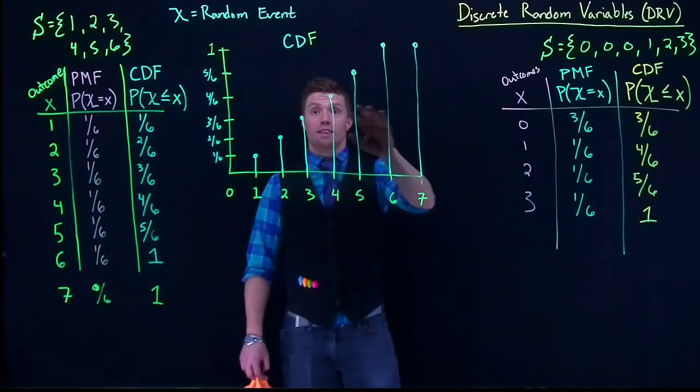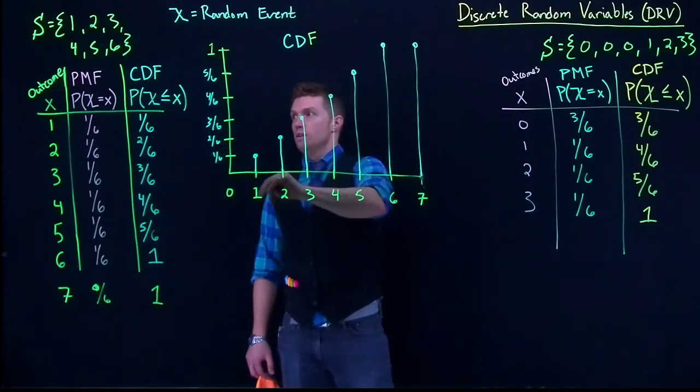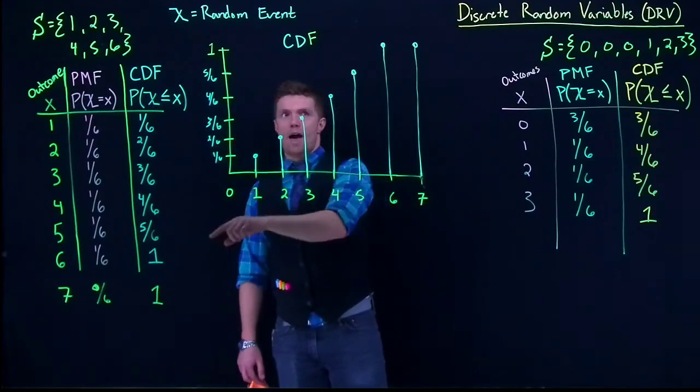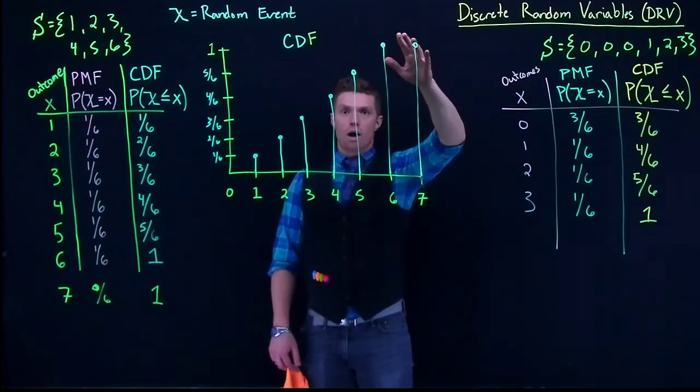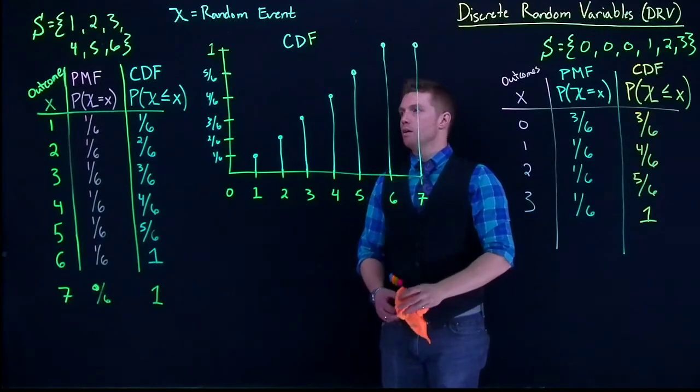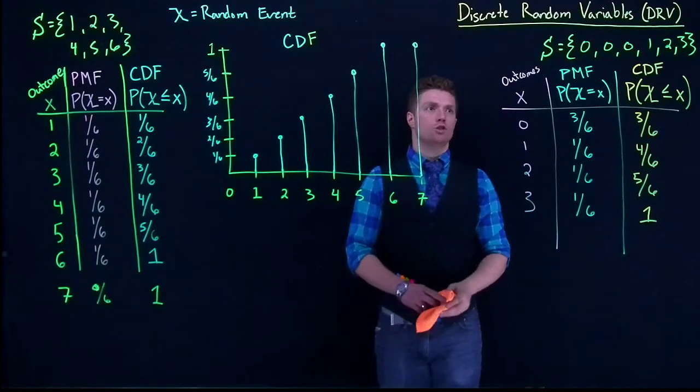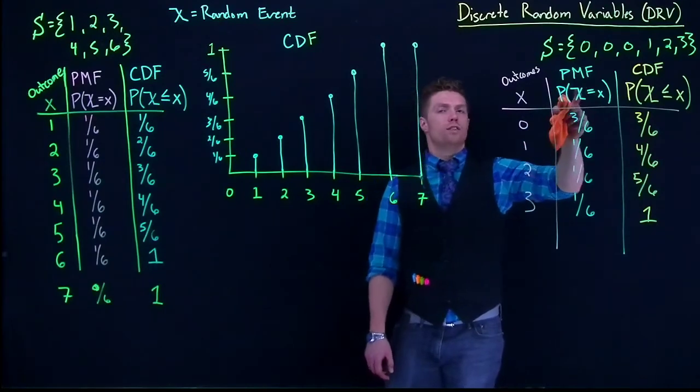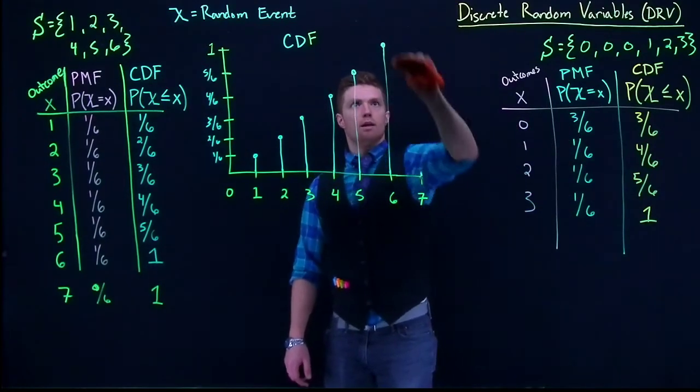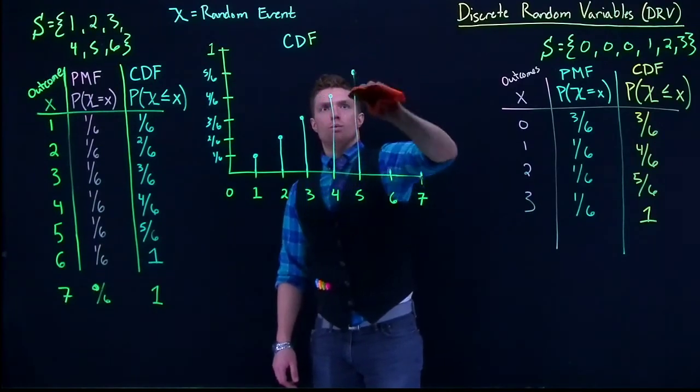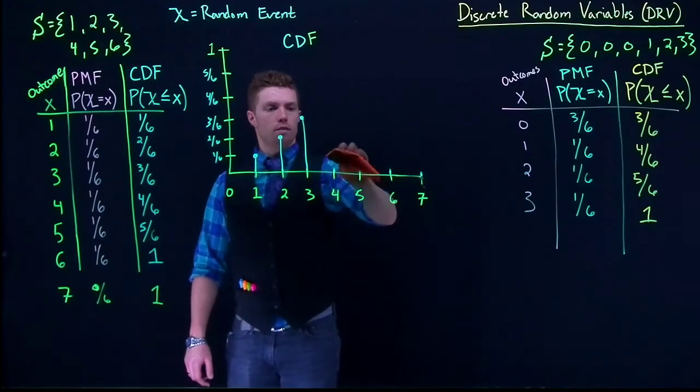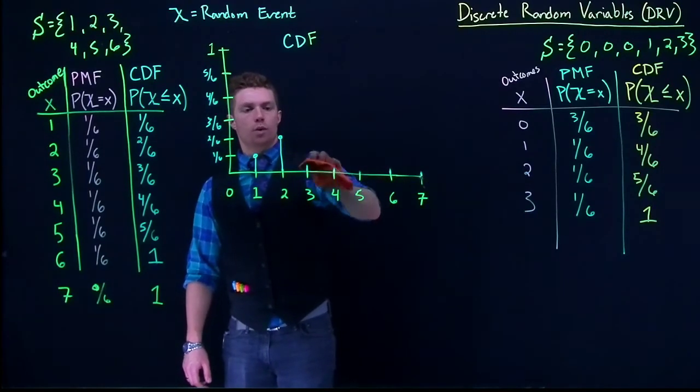Remember that the rules still hold. So the sum of the values on the PMF should equal to 1. The last value on the CDF should be 1. It's just a cool way to be able to look at this and to think about our probabilities. All right, so let's do another example. Let's use this example with our strange dice. Let's go ahead and erase this real quick and we'll do the same thing. We'll start off with our PMF and we'll move to our CDF.